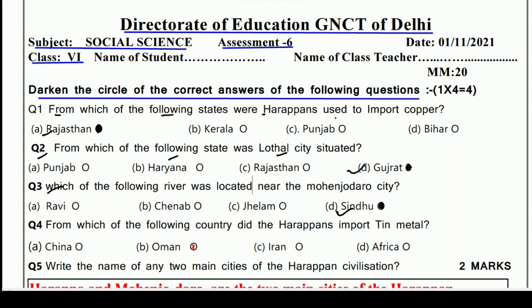Next question: From which of the following countries did the Harappans import tin metal? Which country did the Harappans import tin from? Options are China, Oman, Iran, and Africa. The right answer is B, Oman.